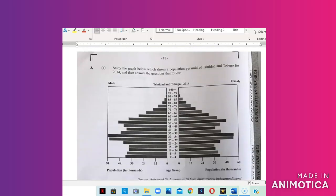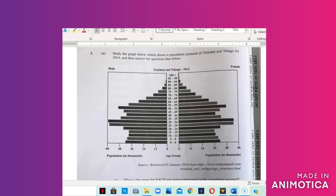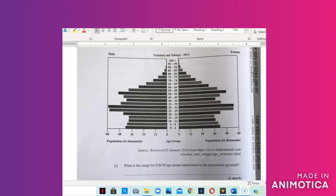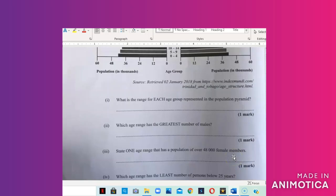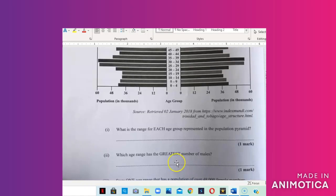So question number three shows us a graph, and the graph shows a population pyramid for Trinidad and Tobago for 2014. We'll answer the questions that follow. This is the population pyramid.